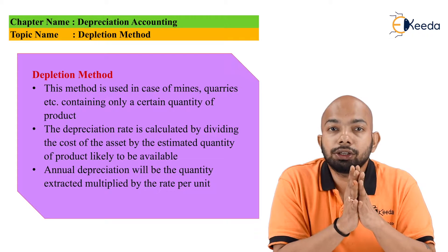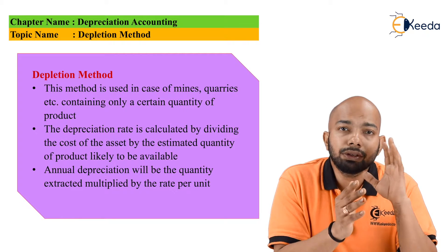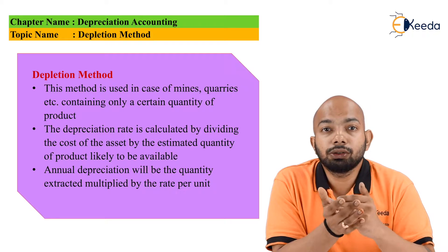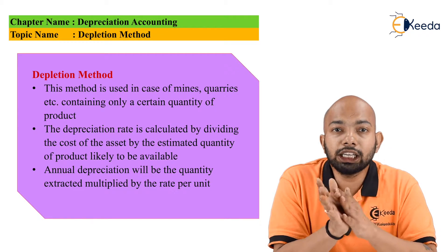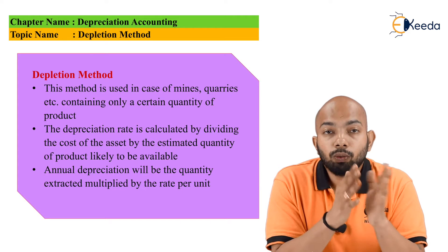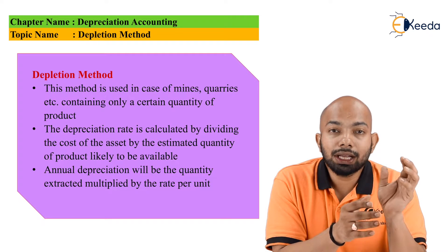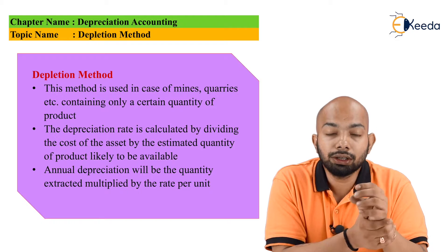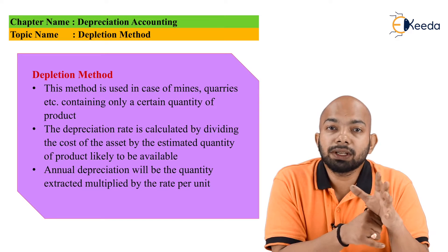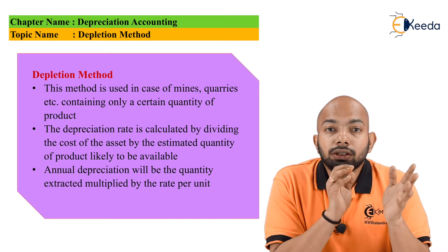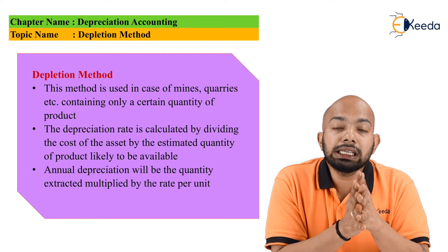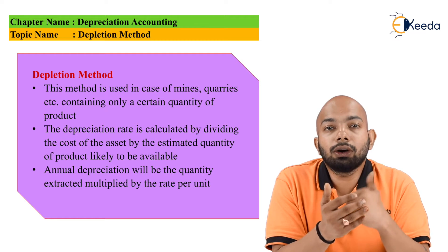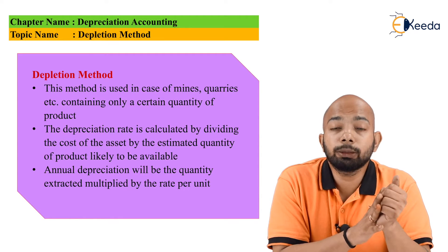In this method, you will have certain patterns — segregation as per year. First year this much tonnage is utilized, second year this much, third year this much, and so on. What you are supposed to do is take the depletion during that year divided by the total expected depletion, multiplied by the cost of that specific asset. That gives you the depreciation for that specific year, and accordingly we can calculate the closing balance of that asset at the end of each year.